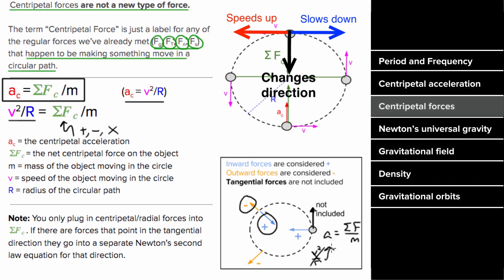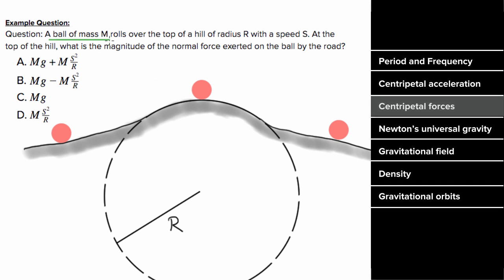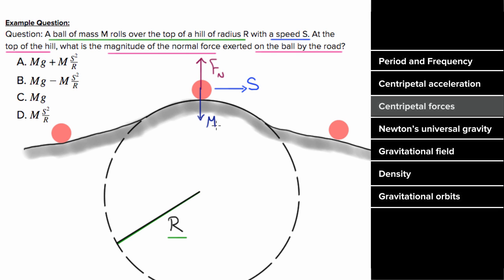So what's an example problem involving centripetal forces look like? Imagine a ball of mass m rolling over the top of a hill of radius r at speed s. What's the magnitude of the normal force exerted on the ball by the road at the top of the hill? There's an upward normal force and a downward force of gravity. These two forces are not equal and opposite — if they were, the object would maintain its velocity in a straight line. But the ball accelerates downward, so the normal force must be less than the force of gravity.